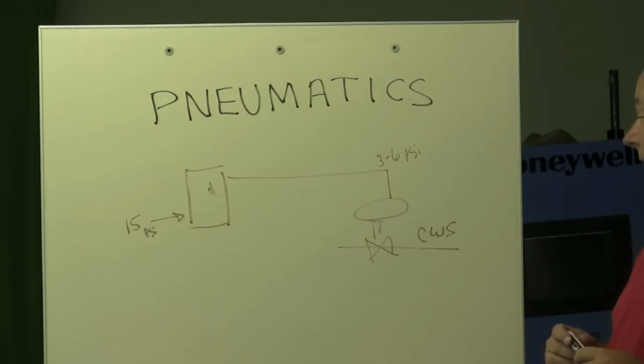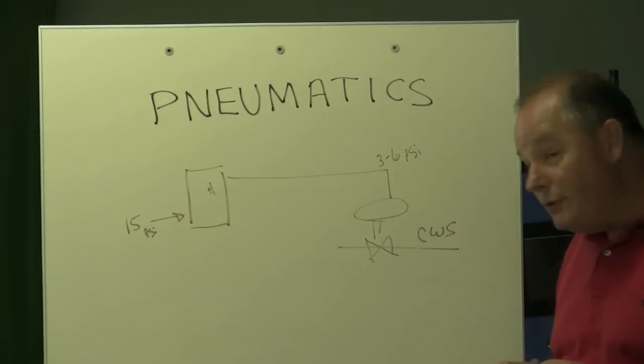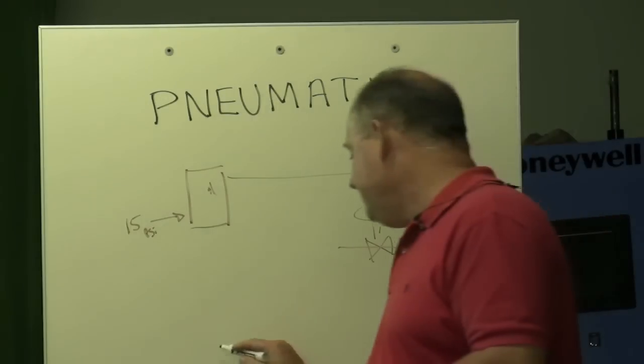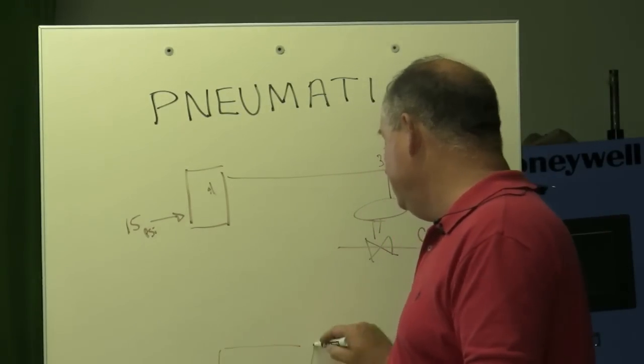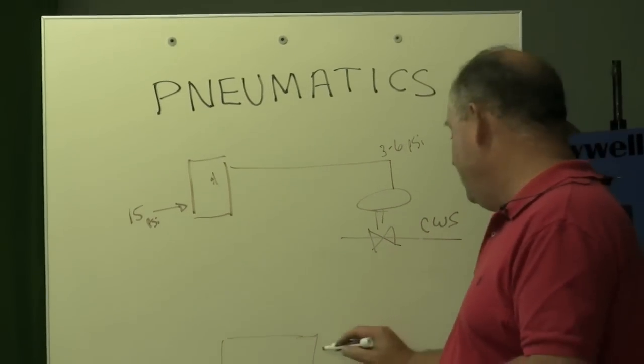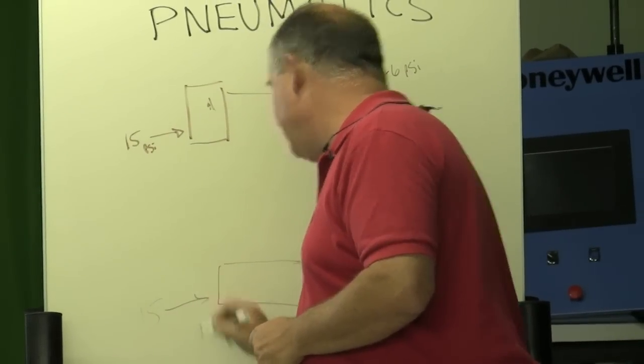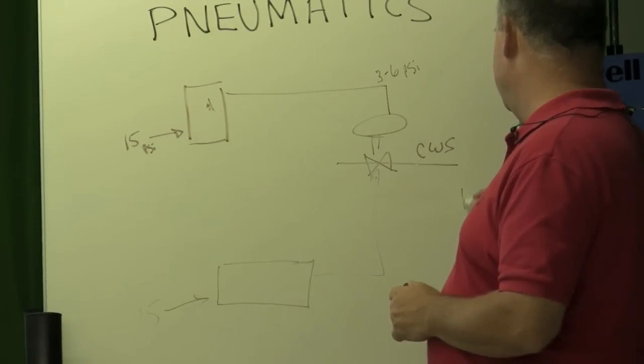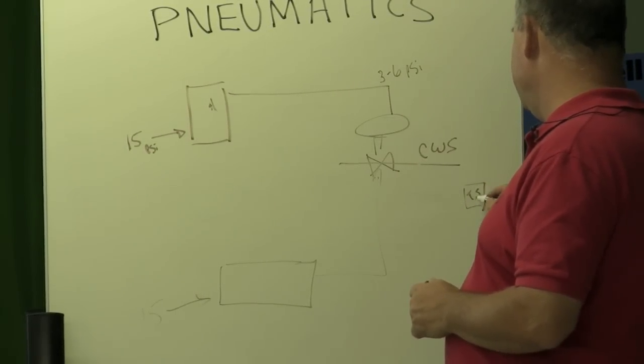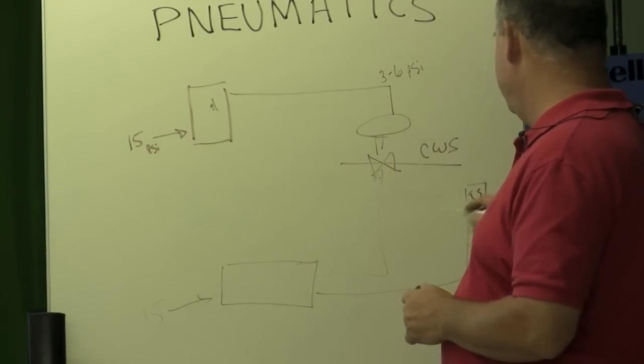Now another way we could do this, if we had a receiver controller, we'd have an output that goes to that valve, we'd have 15 PSI coming into it, and somehow over here we'd want a little temperature sensor that's in the space and it would run over.